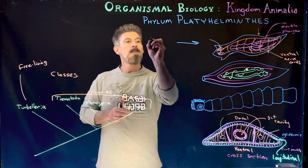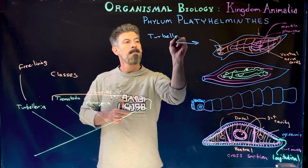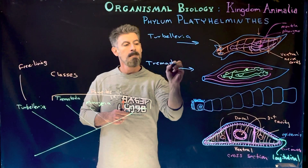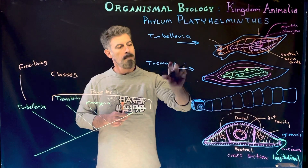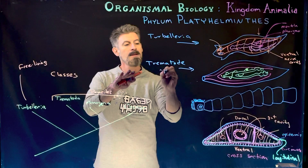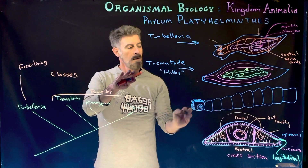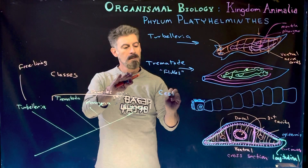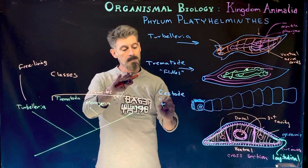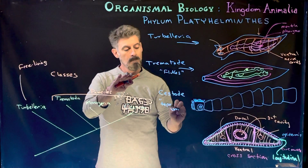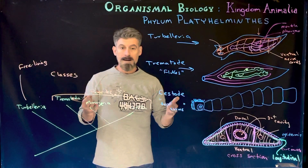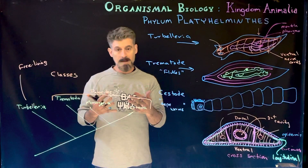This organism here would be more of the Turbellaria. This one here represents a Trematode — the trematodes are also referred to as flukes. And this is a Cestode, which we would call the tapeworms.